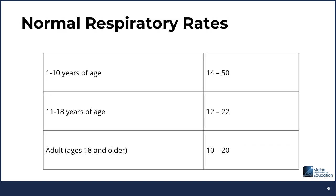Normal respiratory rates are listed here. For school-age children you may see rates roughly between 14 to 50 breaths per minute, or 12 to 22 breaths per minute depending on age. Respiratory rate is important to assess when the child is distracted — for example, letting them know you are listening to their heart while you count respirations at the same time, since children will often hold their breath or change their pattern if they know you are listening.